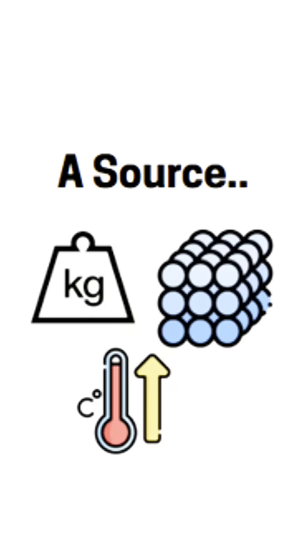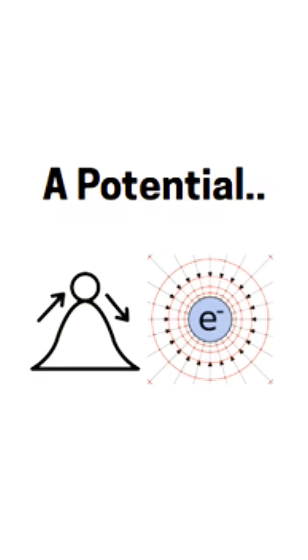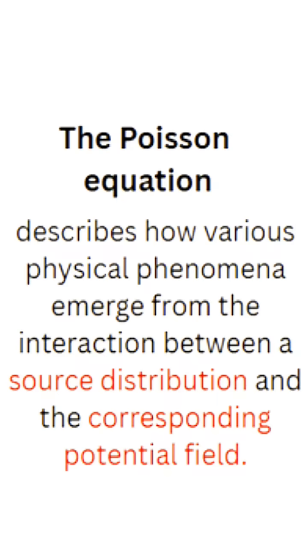Every physical phenomenon in physics has two parts: one is the source, which can be the mass, the density, or the heat, and the other is called the potential — it can be gravitational potential, electrostatic potential, or anything. The source describes the event and the potential measures it. This is exactly what the Poisson equation tells us about — how various physical phenomena emerge from the interaction between a source distribution and a potential field.